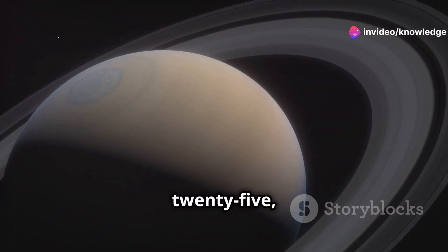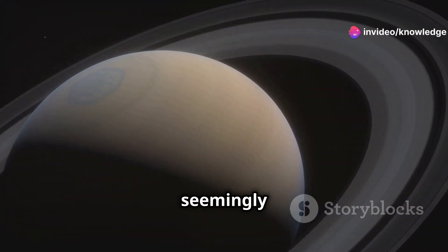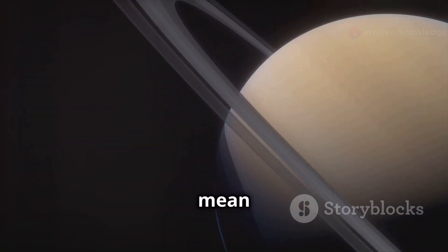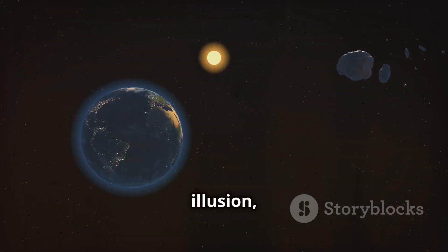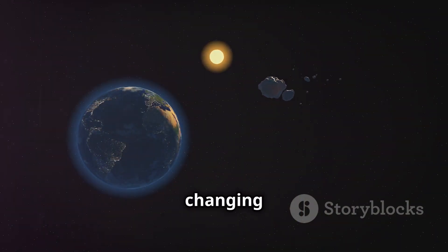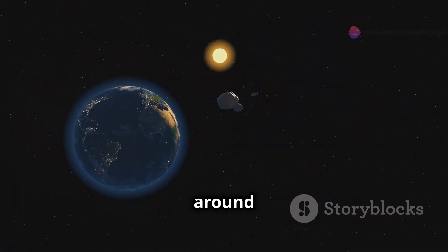In March 2025, Saturn's rings will seemingly disappear. This doesn't mean they'll vanish entirely. It's an illusion, a trick of perspective caused by the changing alignment of Saturn and Earth as they journey around the Sun.